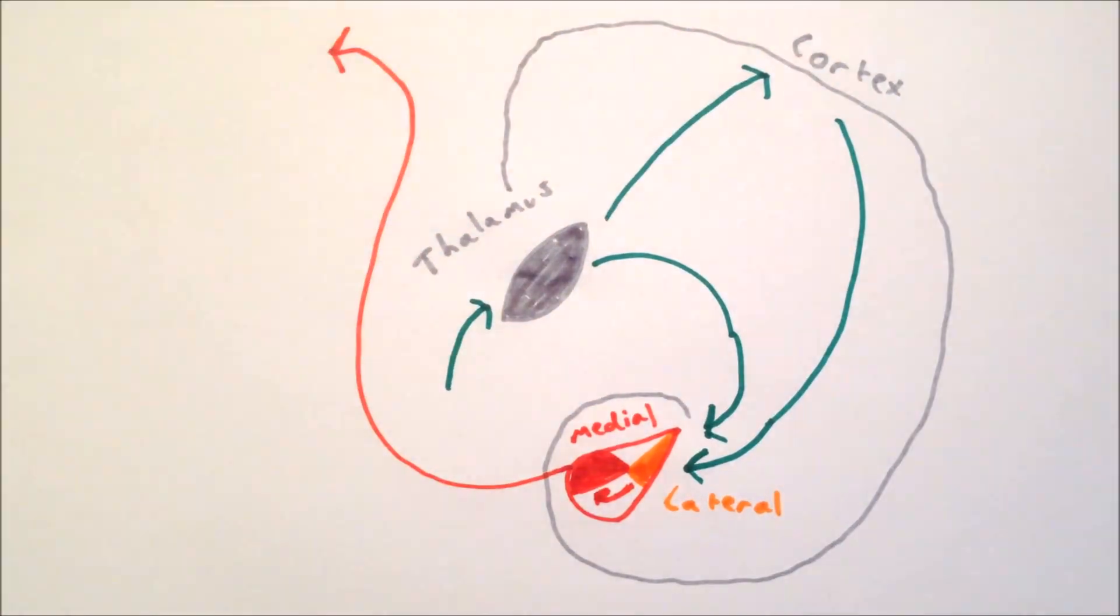The primary output nucleus of the amygdala is the central medial nucleus. This projects to a number of different structures. It projects to the paraventricular nucleus of the hypothalamus and triggers the release of the stress hormone, cortisol.